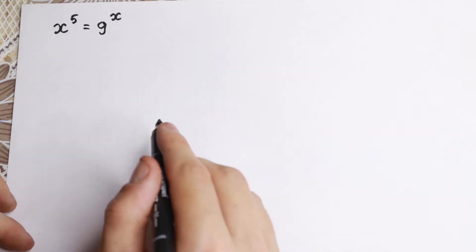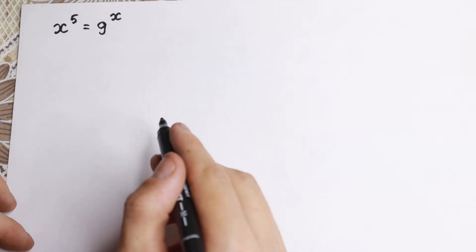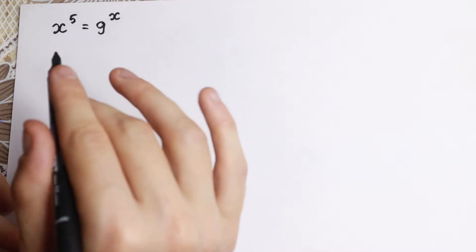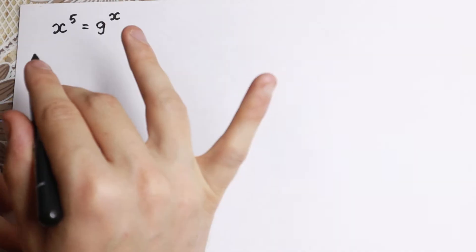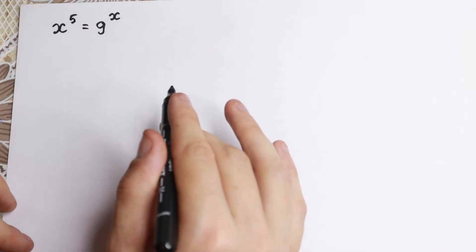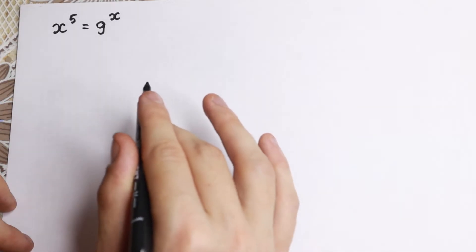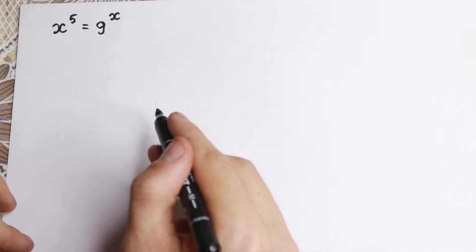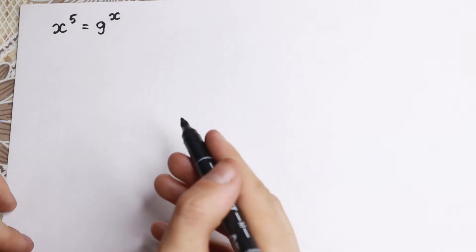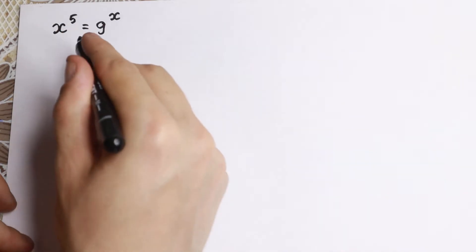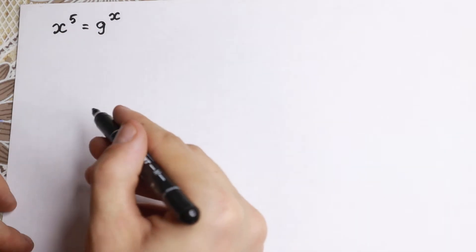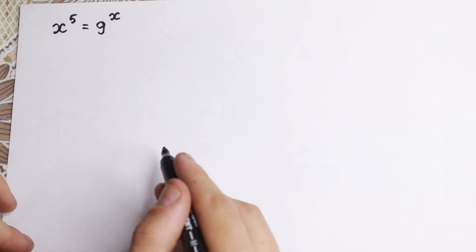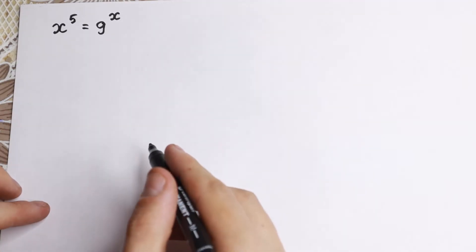This equation looks like an easy one because we have no huge powers — we have 5, 9, we have x right here and x right here, no squares, no cubes. It looks like a really easy equation and we can find a root by inspection, but I want to show you a method. This is a higher math problem, not a school problem — we need to use our tricks and formulas. So I want to show you how we can solve it.